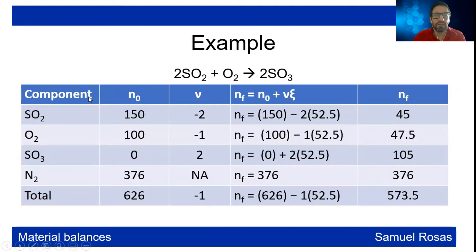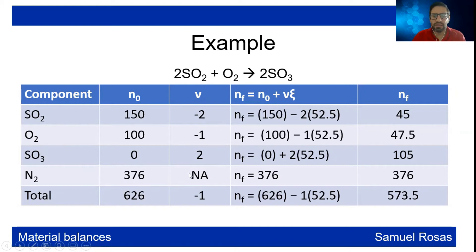We have the following components: SO2, O2, SO3, N2, and a total. The initial moles are 150 for SO2, 100 for O2, 0 for SO3, and 376 for N2, summing to 626. The stoichiometric coefficients — where sign matters — are negative for reactants: −2 for SO2 and −1 for O2, and positive for the product: +2 for SO3. N2 is inert and does not apply. Summing −2, −1, and +2 gives a total of −1.